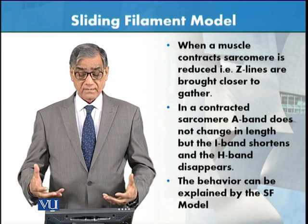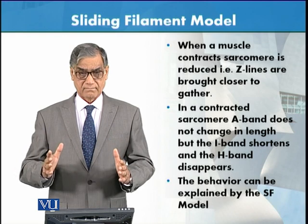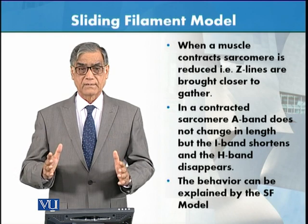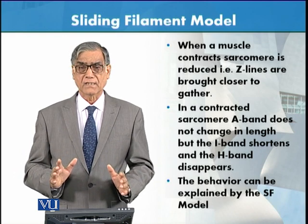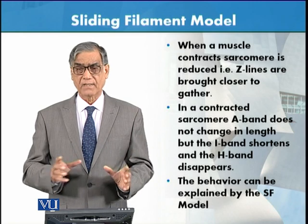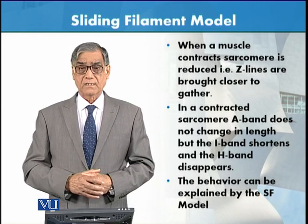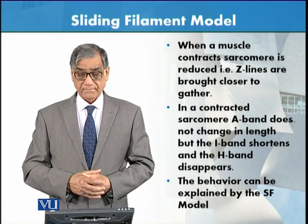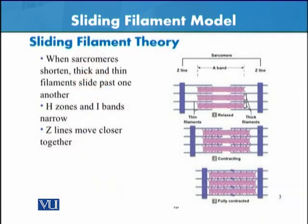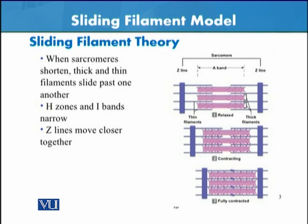In a contracted sarcomere, the A band remains as such — it does not change. This is what is called the sliding filament theory or model, and this is what we have to explain.